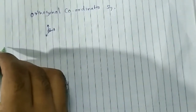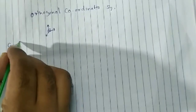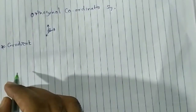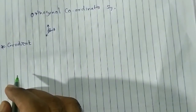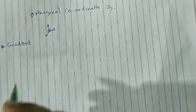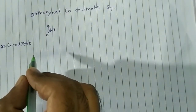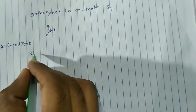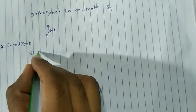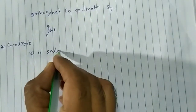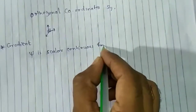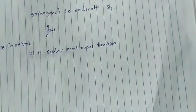Now we will start with the gradient. So, gradient in an orthogonal coordinate system — that is, a curvilinear coordinate system whose property is orthogonal. I will define that there is some function psi (ψ), which is a scalar continuous function.